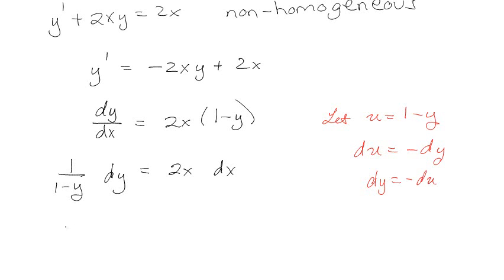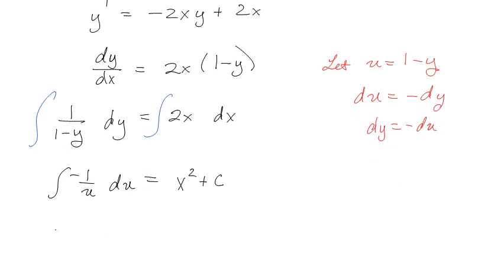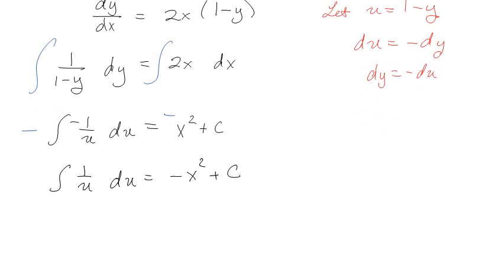So I can do my substitution. I've got 1/u with a negative du on the left, and if I integrate the right I've got x squared plus c. I'm going to multiply both sides by a negative sign so I don't have to deal with that on the left. So I'll get the integral of du equal to minus x squared plus c, and it doesn't matter if I distribute the negative because it's just a constant.